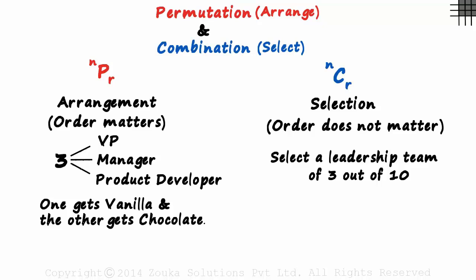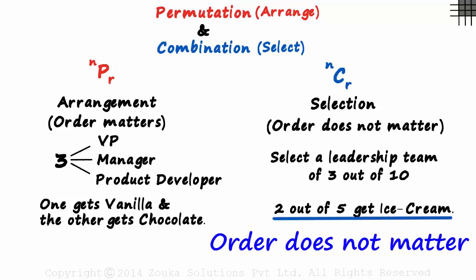And if we are just told that two out of five get ice cream, it will be a case of combination. We aren't told anything else, just that two out of five get ice cream. So the order clearly does not matter.